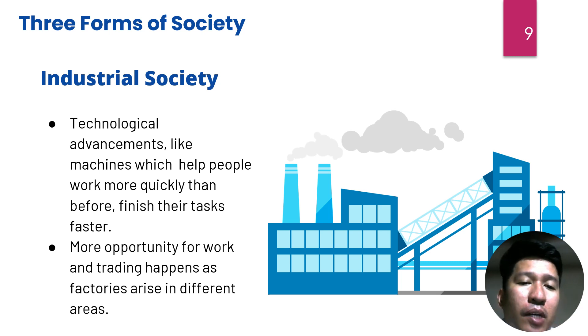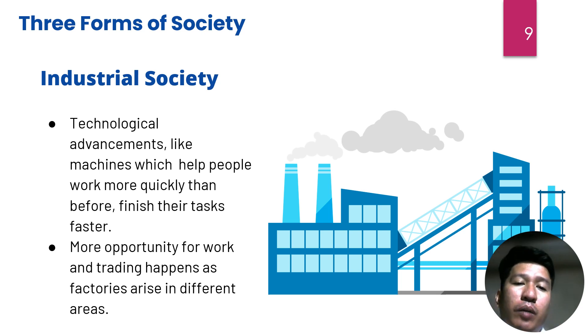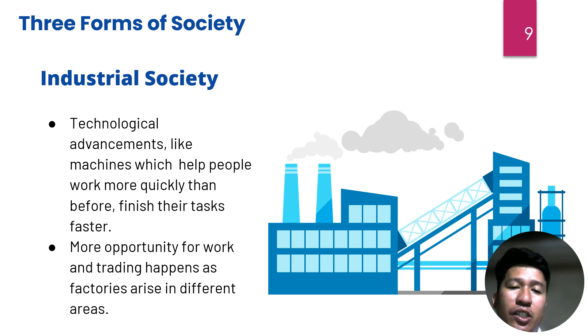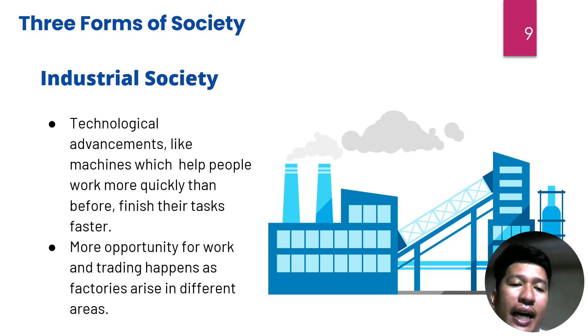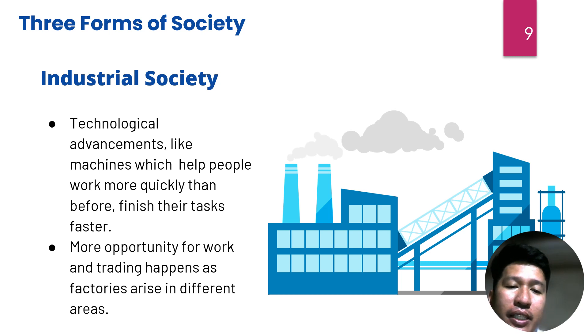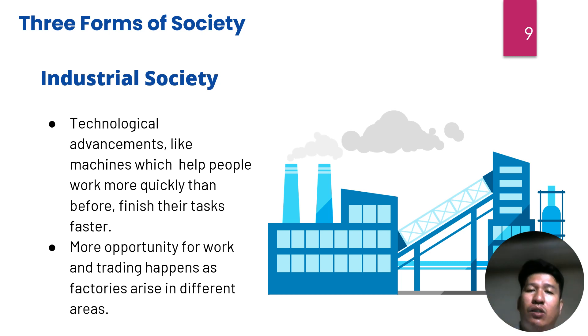Next is industrial society. Technological advancements like machines help people work more quickly than before, finishing tasks faster. This creates more opportunities for work and trade as factories arise in different areas.